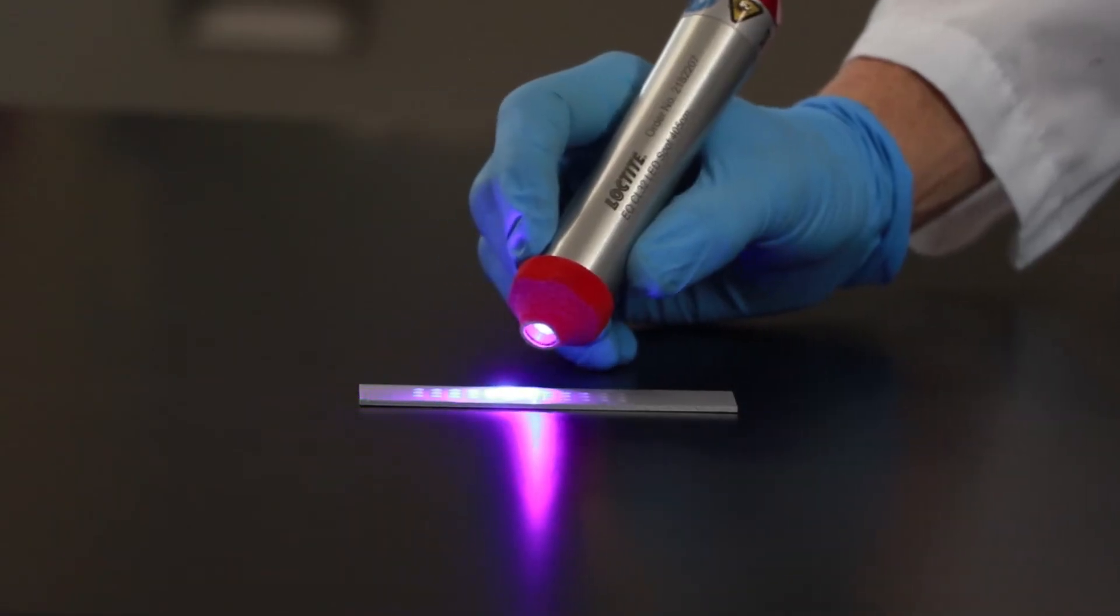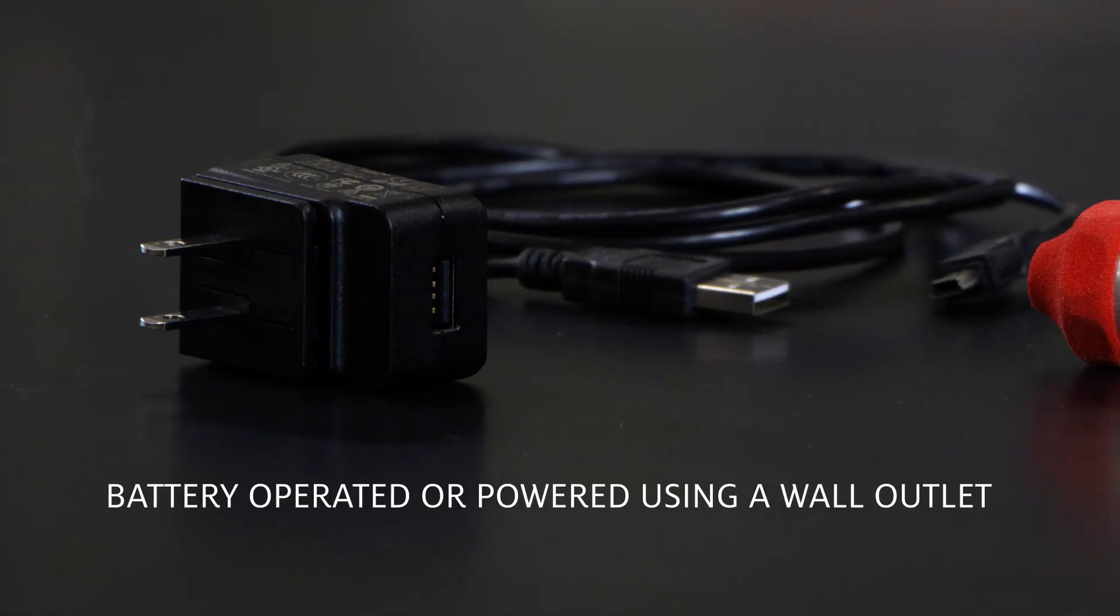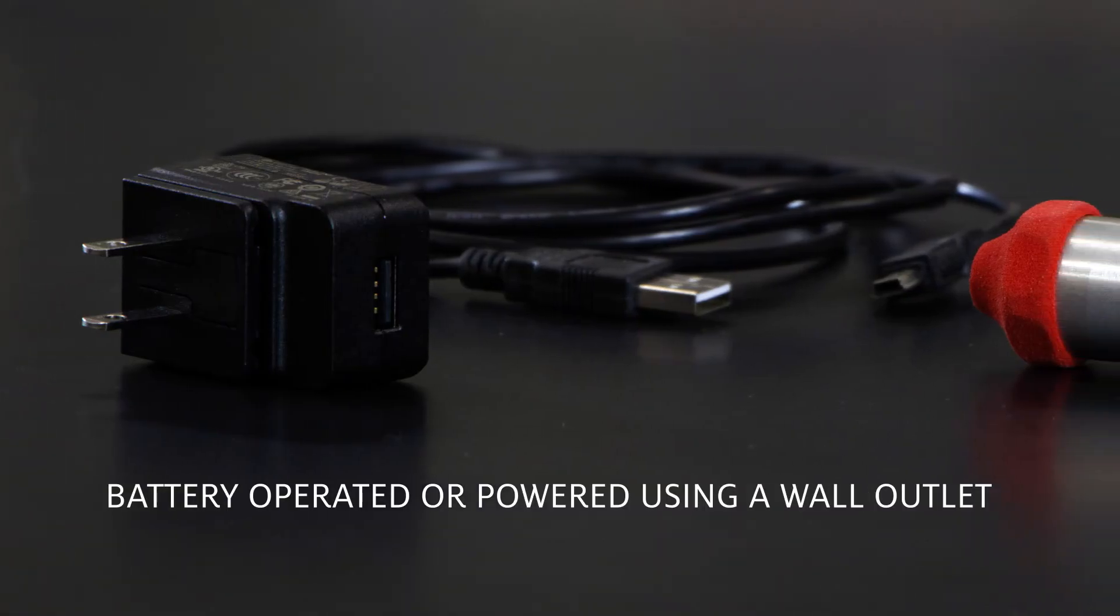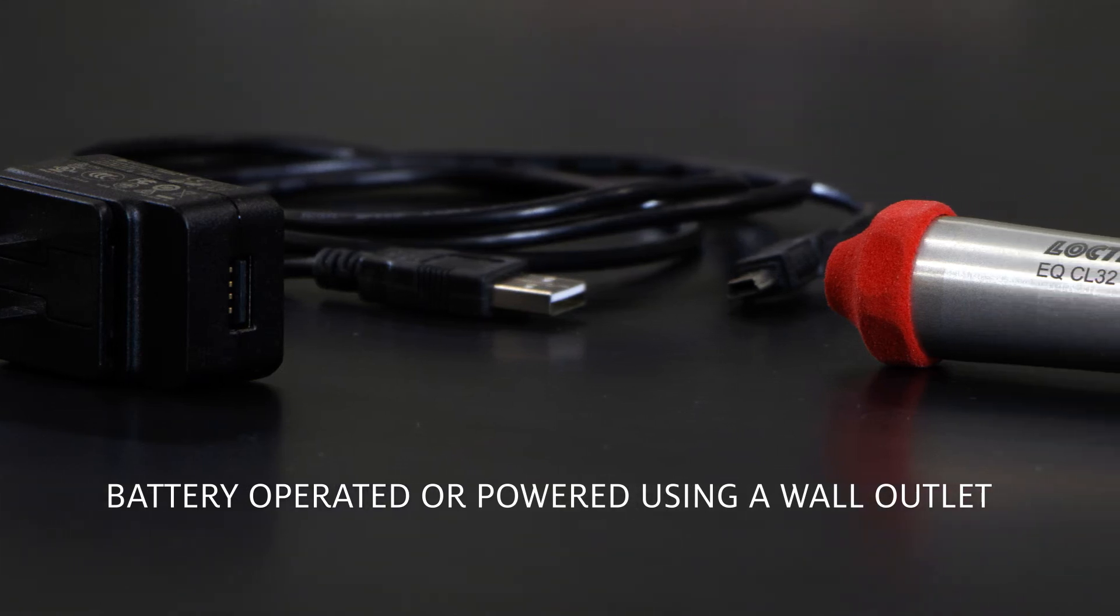For added flexibility, the Loctite CL32 LED spot system can be either battery-operated as a handheld unit, or it can be powered using a wall outlet and mounted for stationary and robotic applications.